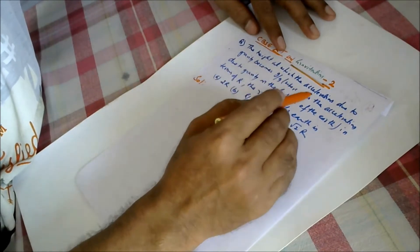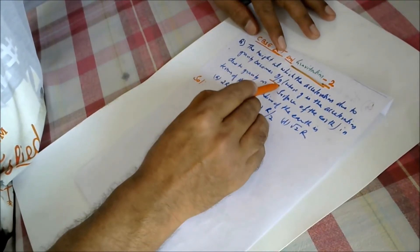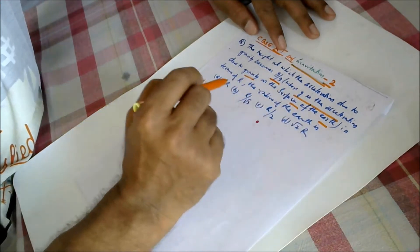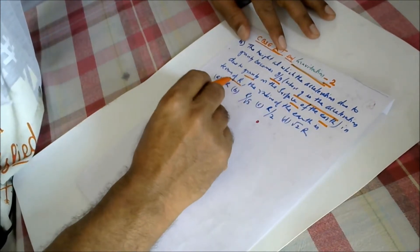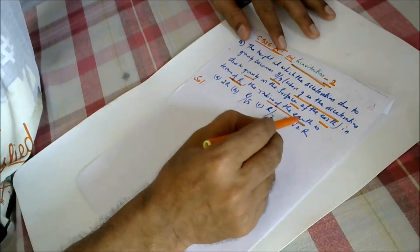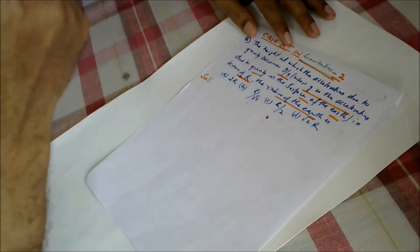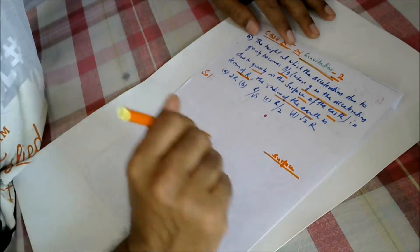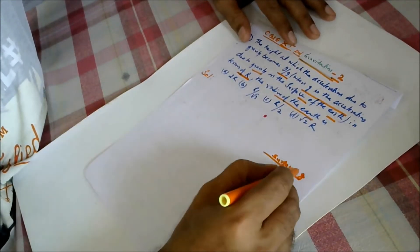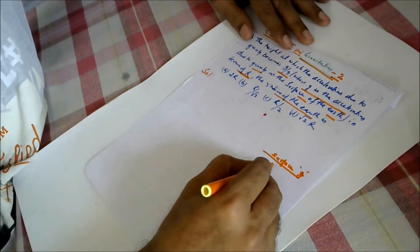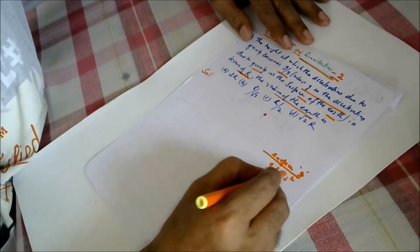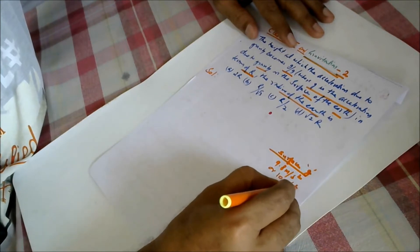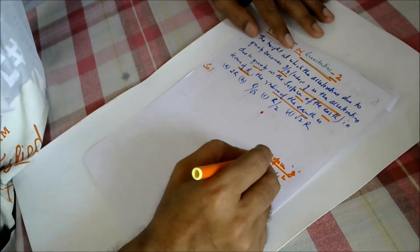The question is: the height at which the acceleration due to gravity becomes g by 9, where g is the acceleration due to gravity on the surface of the earth in terms of r, and r is the radius of the earth. If this is the surface where gravitation due to gravity is g and its value is 9.8 meter per second square, or for calculation we are taking as 10 meter per second square.